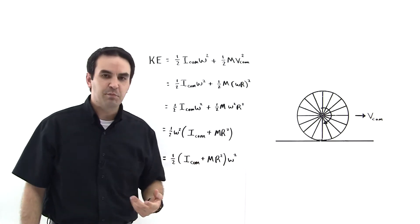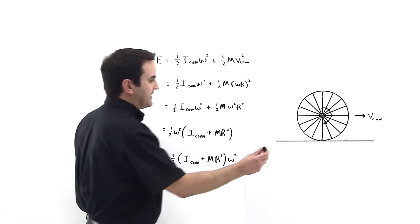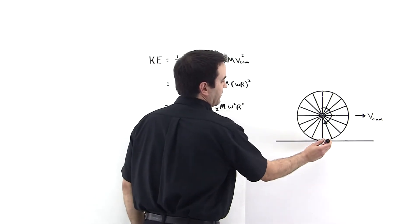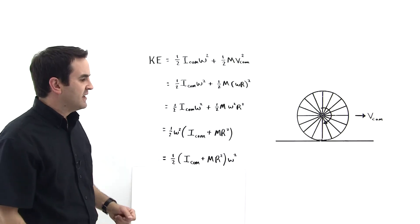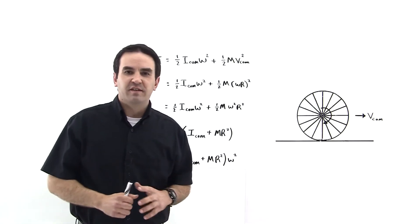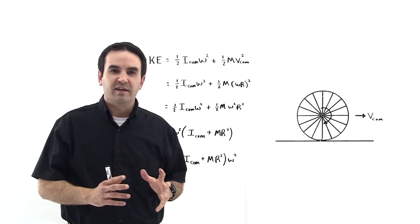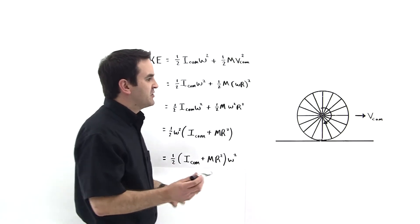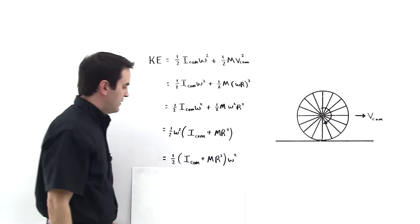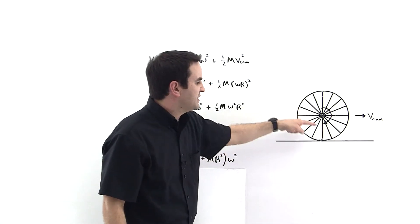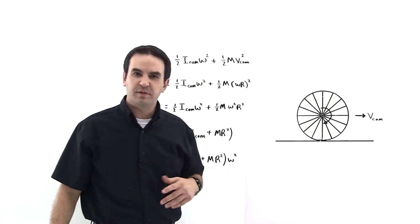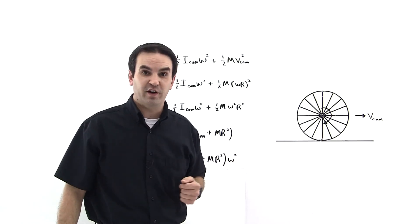Notice what this quantity is in parenthesis. This quantity is the moment of inertia about this axis right down here at the bottom. Because we remember that the parallel axis theorem says that the moment of inertia of some other point on a body is equal to the moment of inertia about the center mass, plus the mass of the object times the distance between those axes squared.